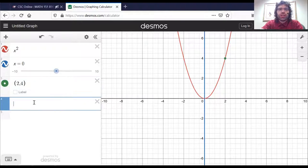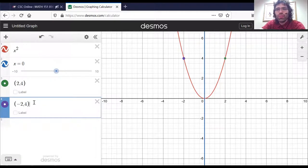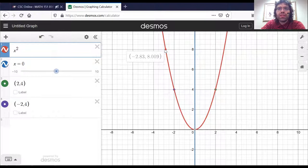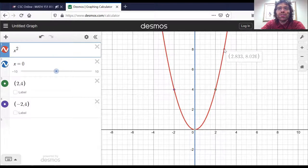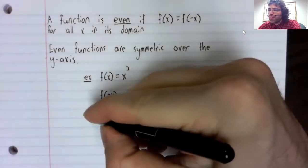its reflection is the point negative two comma four. And you see this point and its reflection over the y-axis are both on the curve. And that's true for every point on the graph. Like this point here. Its reflection over the y-axis is also on the graph.